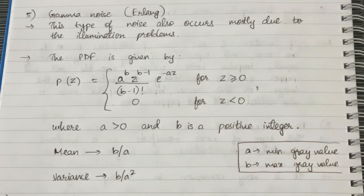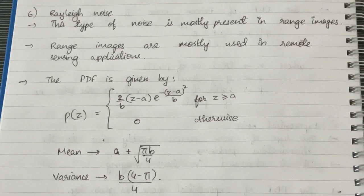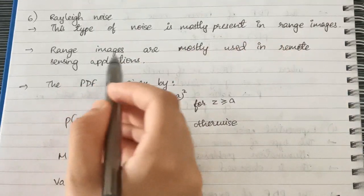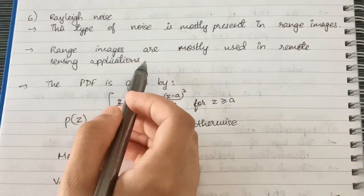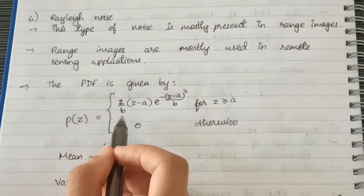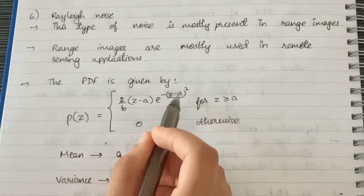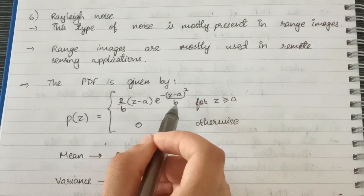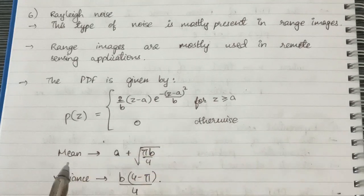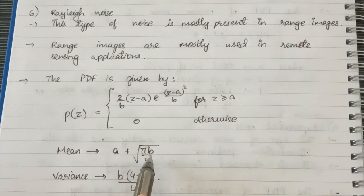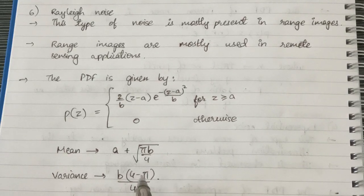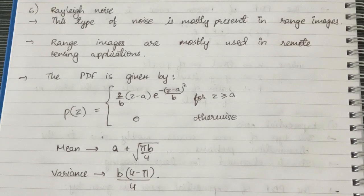Next is Rayleigh noise. This type of noise is mostly present in range images, which are commonly used in remote sensing applications. The PDF is: p(z) = (2/b)(z − a) · e^(−(z−a)² / b) for z ≥ a, and 0 otherwise. The mean is a + √(πb/4) and the variance is b(4 − π)/4.